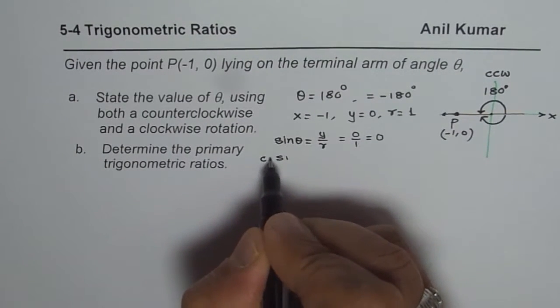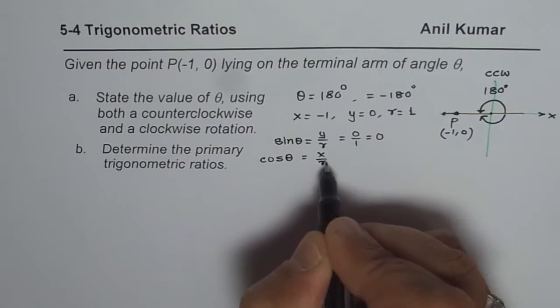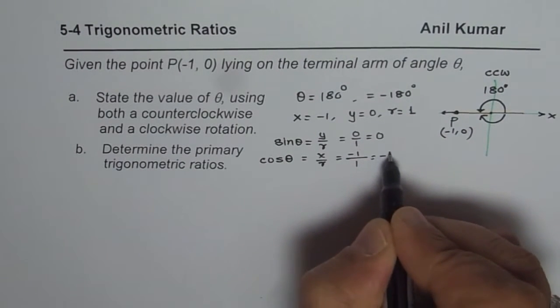Now let us find cos theta. Cos theta equals x over r. The x value is -1, so -1 over 1 gives you -1.